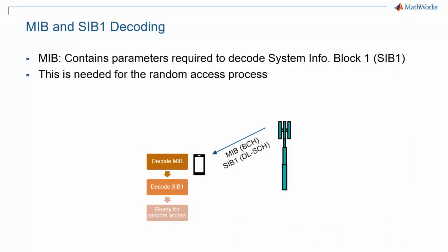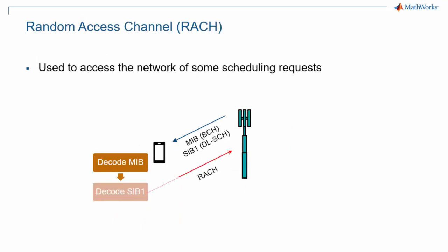The next piece of information the UE looks for is the System Information Block 1, or SIB1. As we saw in the episode about synchronization signal block, the master information block includes all elements needed to locate and decode the SIB1. Note that the SIB1 is carried by the DLSCH, which is the same channel that carries data packets. Once the UE has decoded the SIB1, it has all the information it needs to request access to the network via the random access procedure.